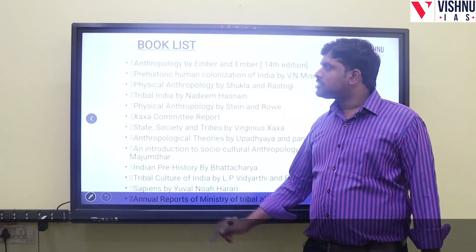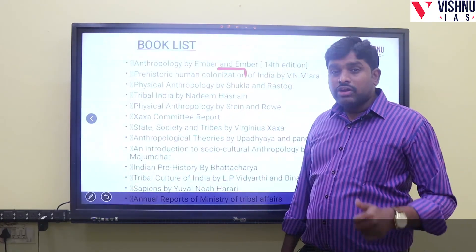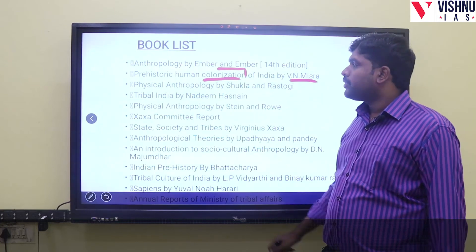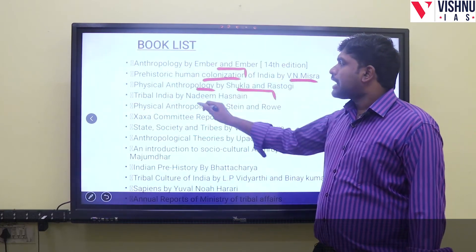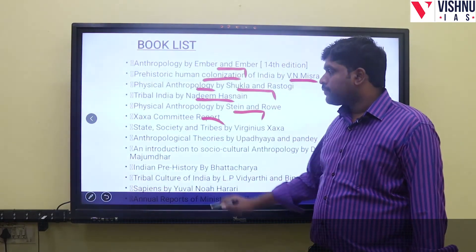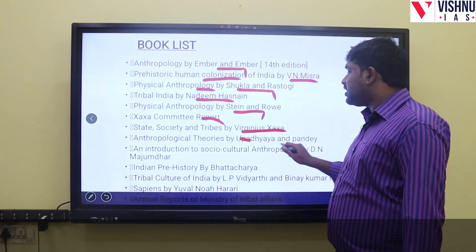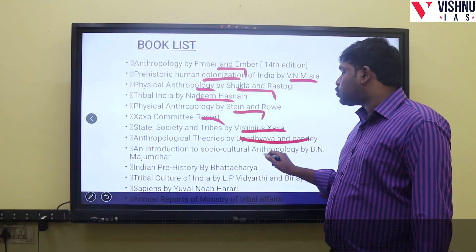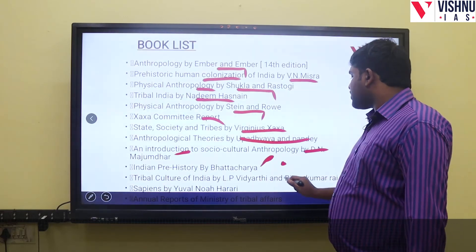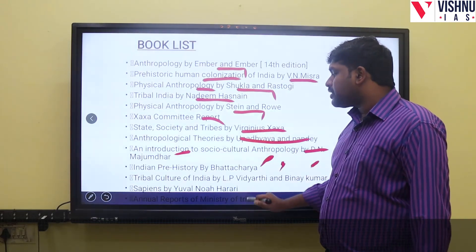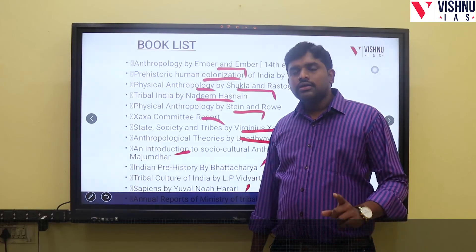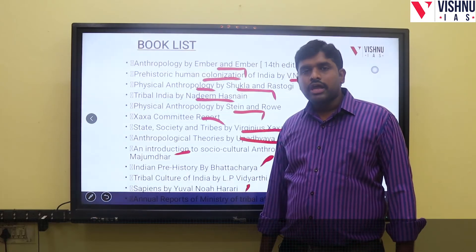Book list: Ember and Ember (highly recommended); Prehistoric and Protohistoric Colonization by V.N. Mishra; Physical Anthropology by Shukla and Rastogi; Tribal India by Nadeem Hasnain; Physical Anthropology by Sten and Roa; Xaxa Committee Report; State, Society and Tribes by Virginius Xaxa; Anthropological Theories by Upadhyay and Pandey; An Introduction to Social and Cultural Anthropology by D.N. Majumdar; Indian Prehistory by Bhattacharya; Tribal Culture of India by L.P. Vidyarthi and Rai; and Sapiens by Yuval Noah Harari. Annual reports should also be read.